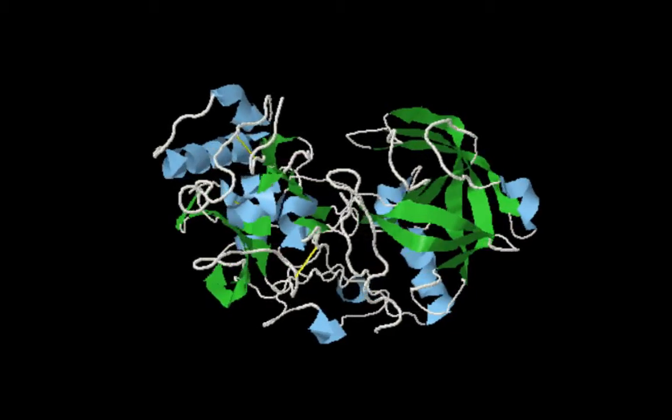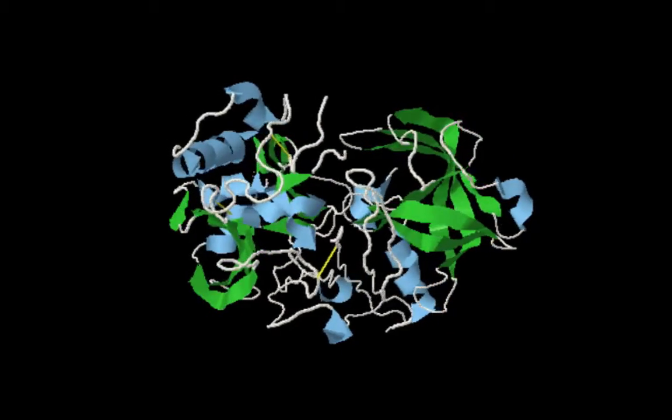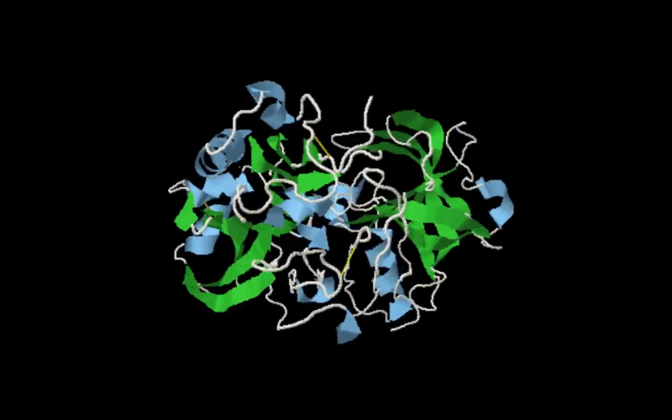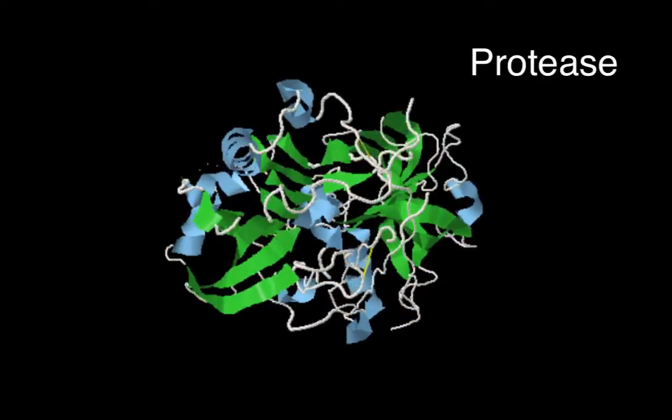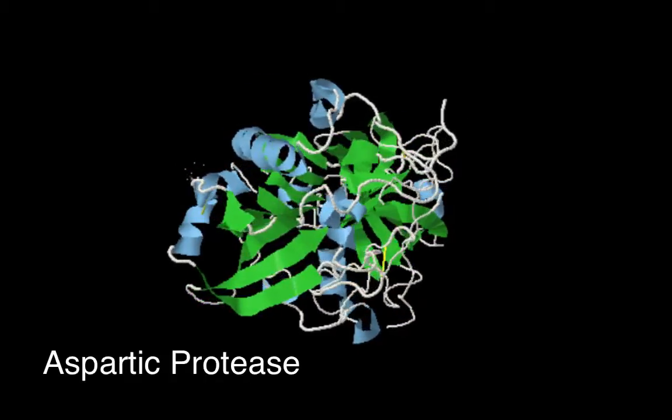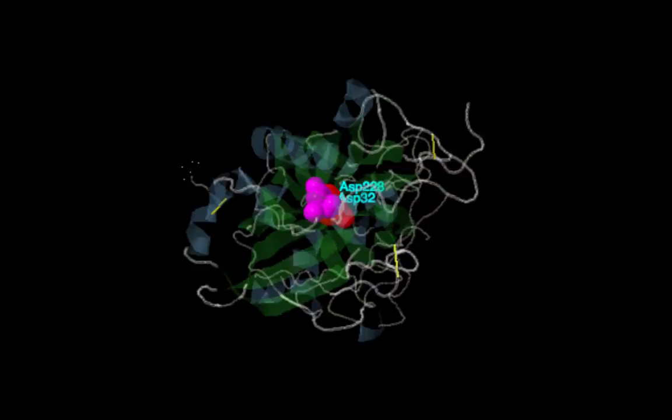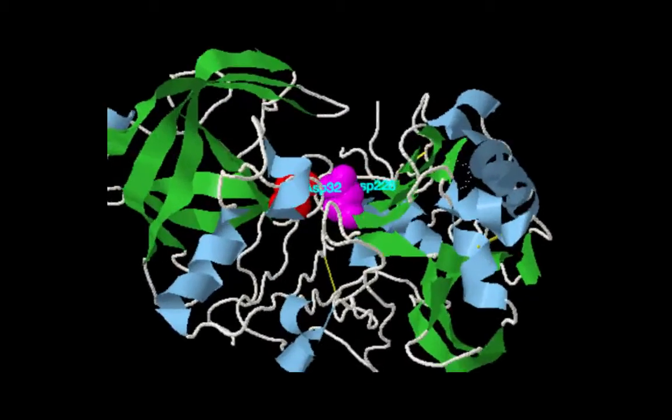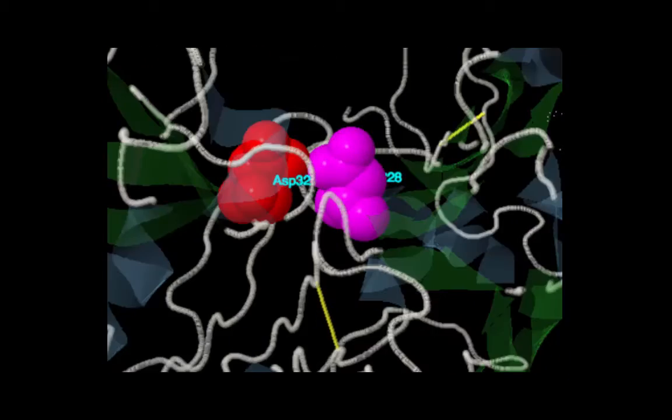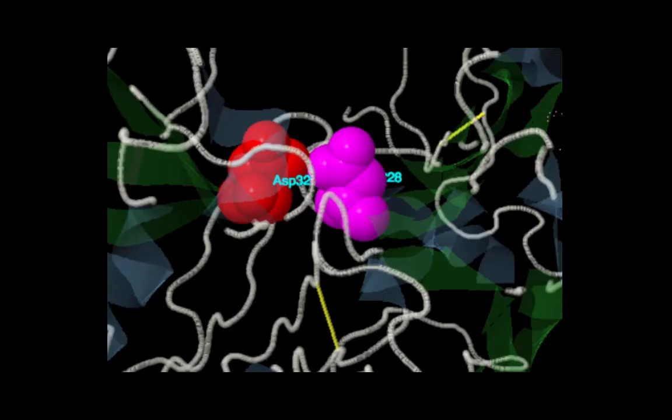Since this enzyme is involved in peptide bond cleavage, it is classified as a protease but more specifically as an aspartic protease. Two critical aspartate residues ASP32 and ASP228 help coordinate a water molecule that is involved in the cleavage mechanism. This is typical of any aspartic protease.